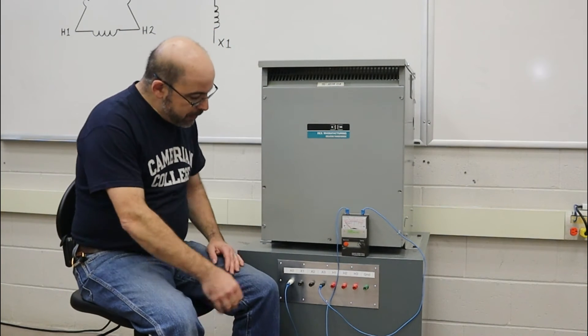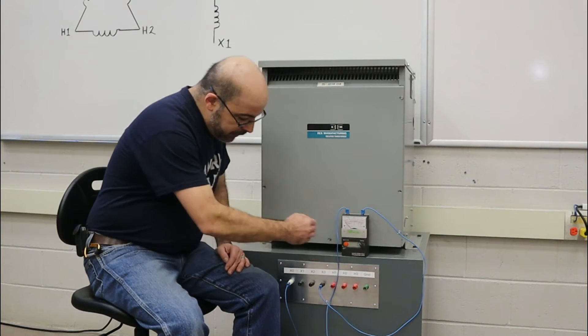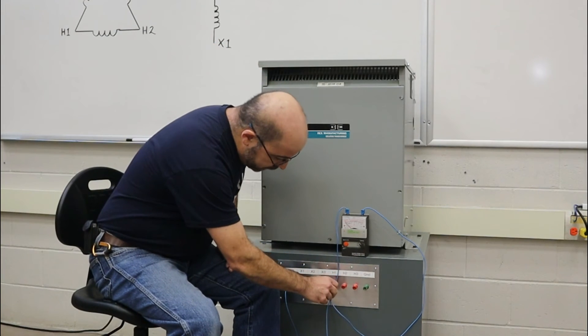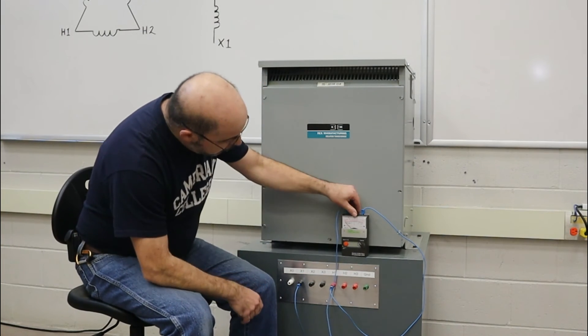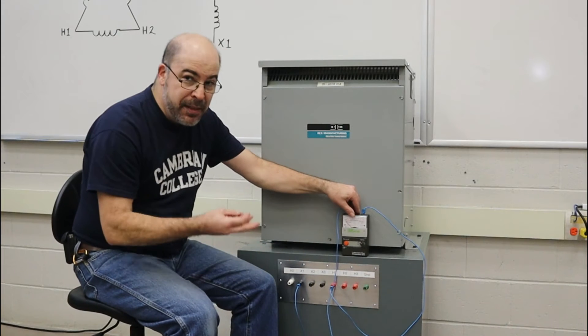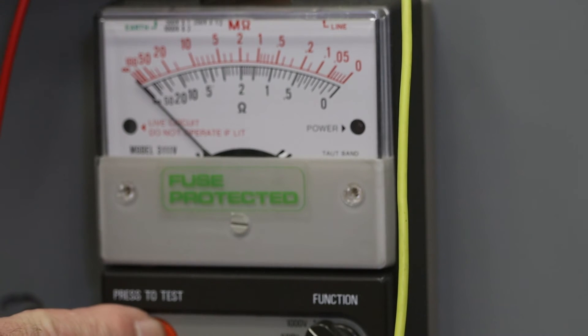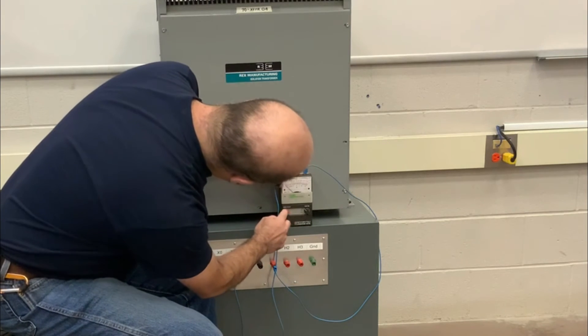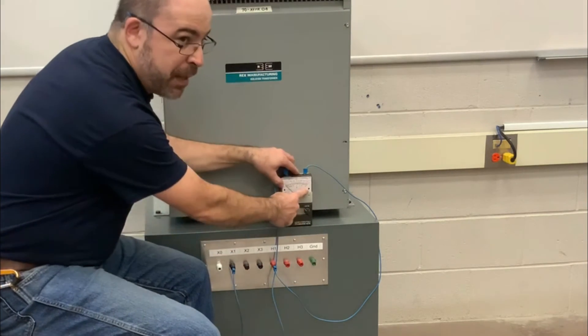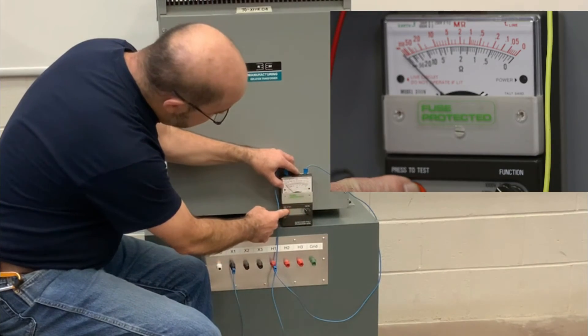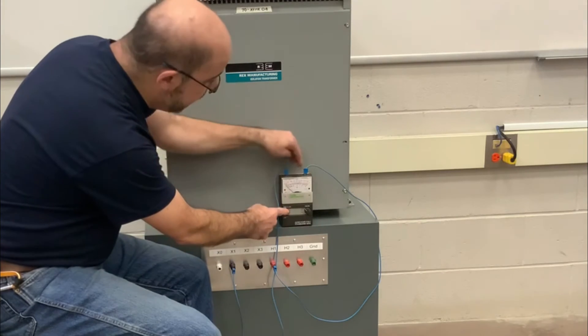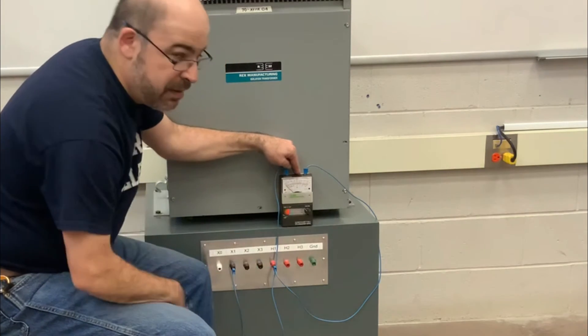Now I want to make sure that there's no continuity that exists between the primary to secondary. So we're going to switch this over to H1 and then reading to X1. And here again I should see infinity. Now what you'll see is when the red light is blinking it means that there's power and I'm actively putting in voltage. So there's no deflection of the needle meaning I have infinite resistance. This is good.